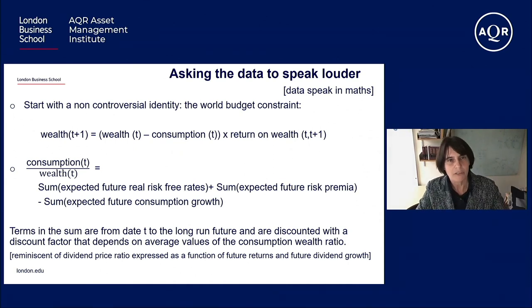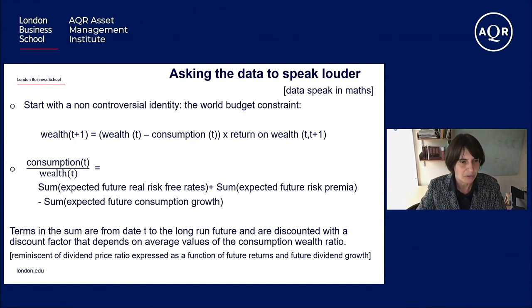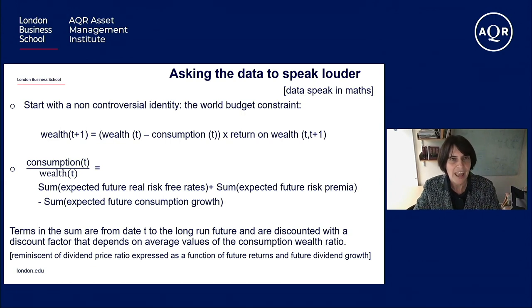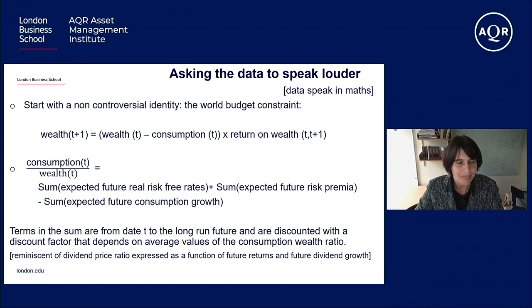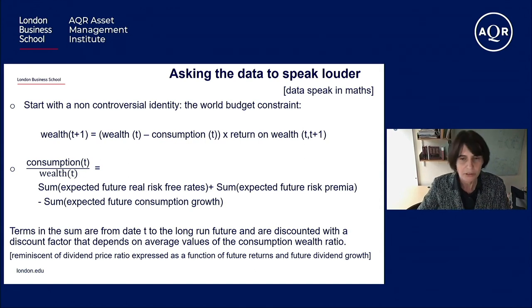Manipulating this identity, we can express an interesting concept — the consumption-wealth ratio — as a sum of expected future real risk-free rates, plus a sum of expected future risk premia, minus the sum of expected future consumption growth. This sum runs from date t to the very long-term future, discounted by a factor depending on average values of the consumption-wealth ratio. For those familiar with asset pricing, this is reminiscent of the dividend-price ratio expressed as a function of future returns and future dividend growth. The consumption-wealth ratio can therefore tell us something about future real risk-free rates, depending on what the data says.